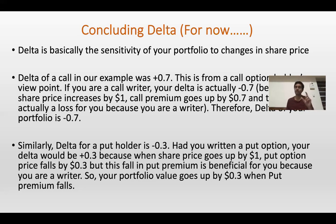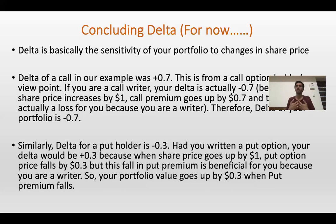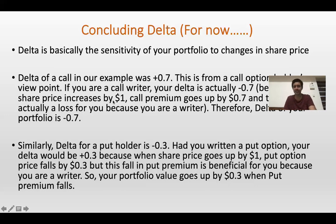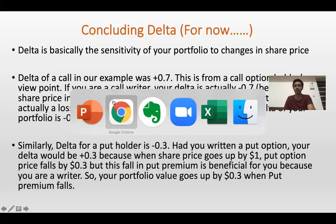We saw that when Delta was 0.7, your call premium changed or increased by 0.7. Similarly, we have to calculate the Delta of the portfolio and conclude whether your portfolio value changes in an upward or downward direction. Before I go on reading the slides, let us actually take an example from the live scenario itself.